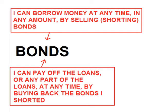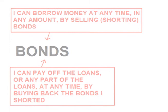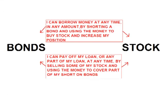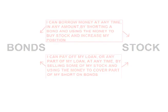In this situation I could borrow money by selling bonds and pay the loans off by buying the bonds back. I then use this borrowed money to buy stock. Therefore, I could freely borrow money to buy stock at any time in any amount by shorting bonds, and I could pay back the loan or any part of the loan at any time in any amount by selling some of the stock and covering those shorts on the bonds.